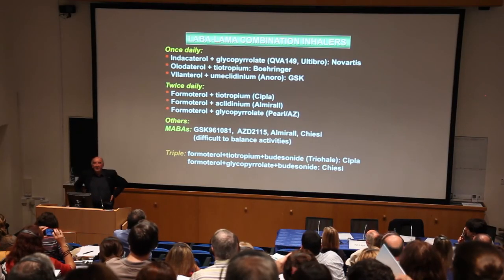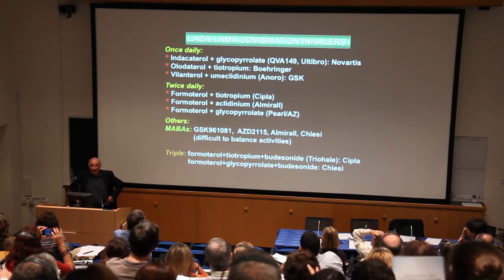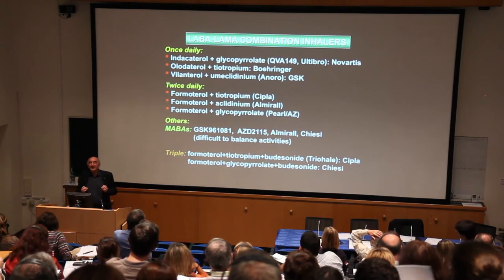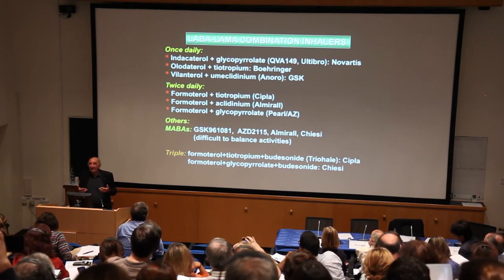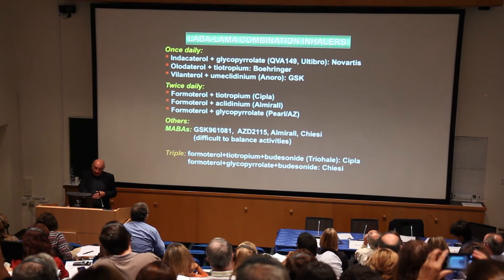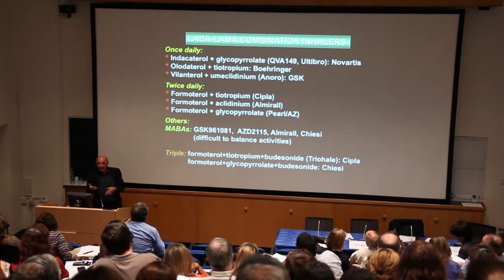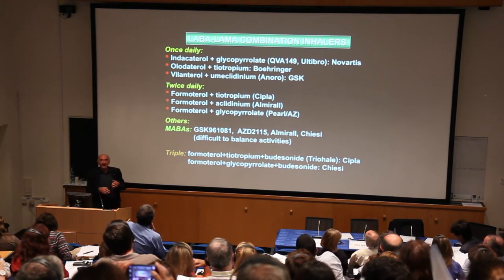There are also MABAs — dual function molecules that have a muscarinic antagonist and a beta agonist at each end of the molecule. These have been extremely difficult to develop because you can't balance the activities very well. The GSK compound is almost entirely a beta agonist, whereas the AstraZeneca one is mainly an anticholinergic. Once you've got the molecule, there's nothing you can do because it's a fixed ratio — you can't change the ratio once you've made it. These have turned out not to be very beneficial.